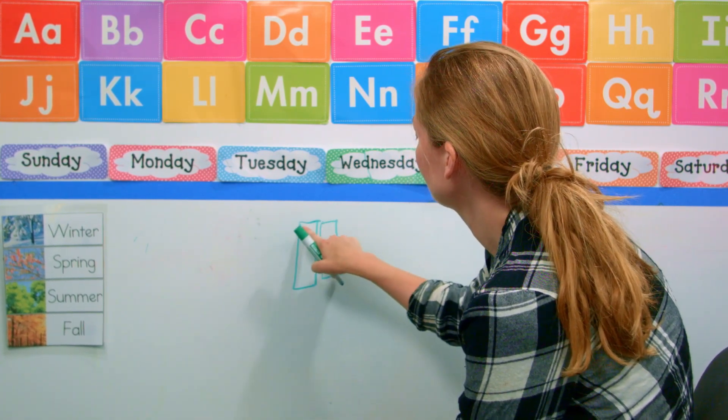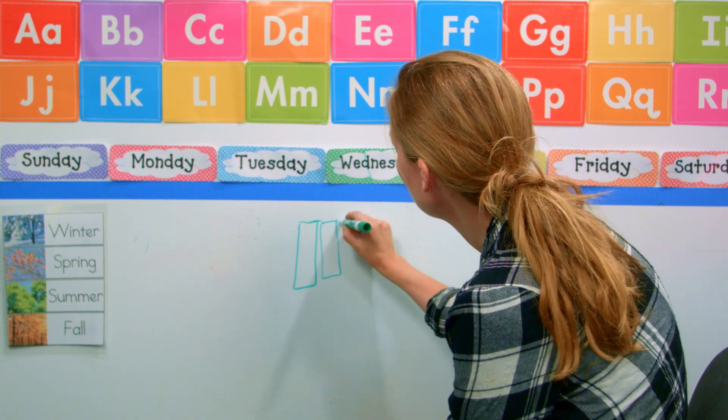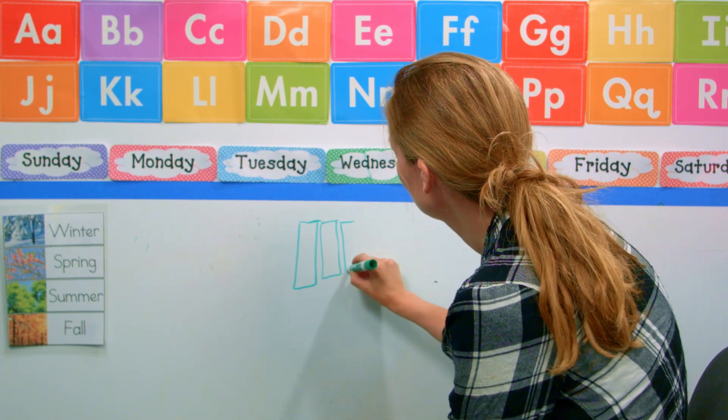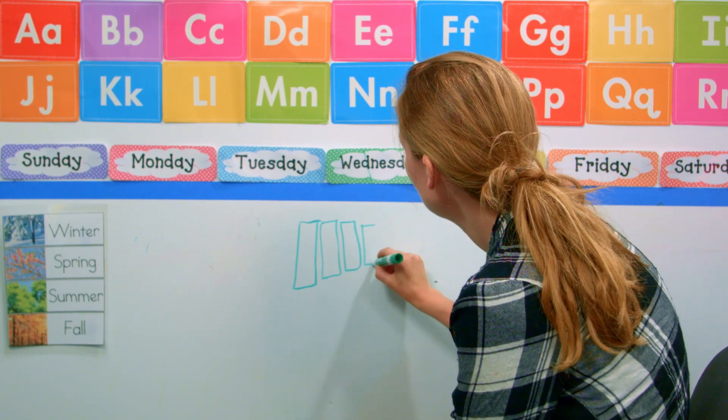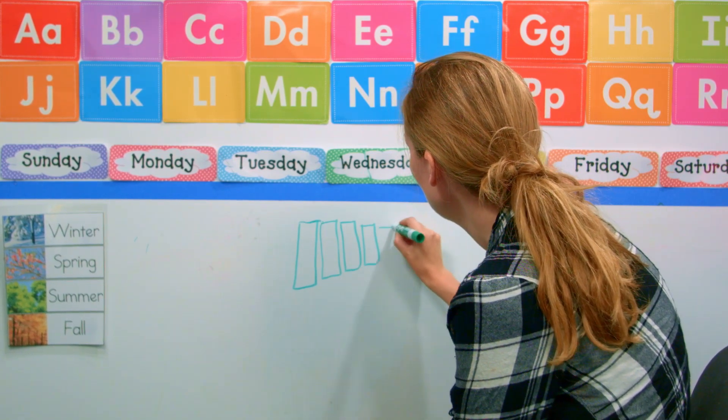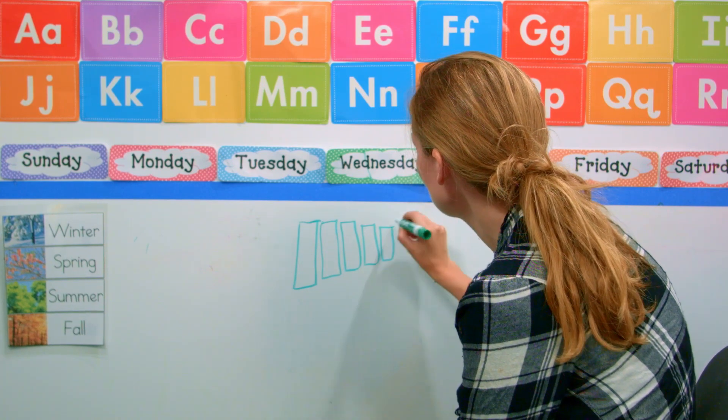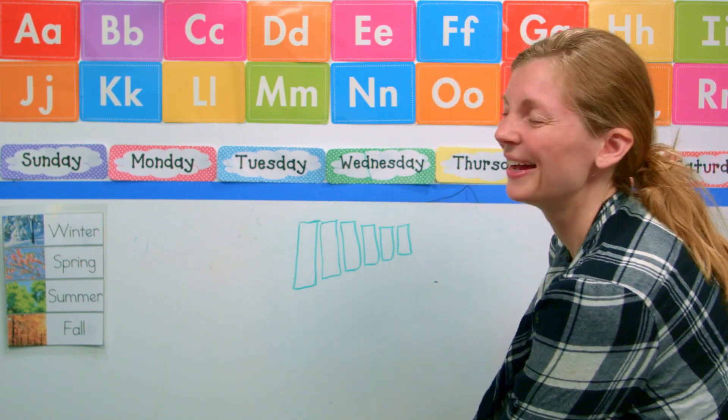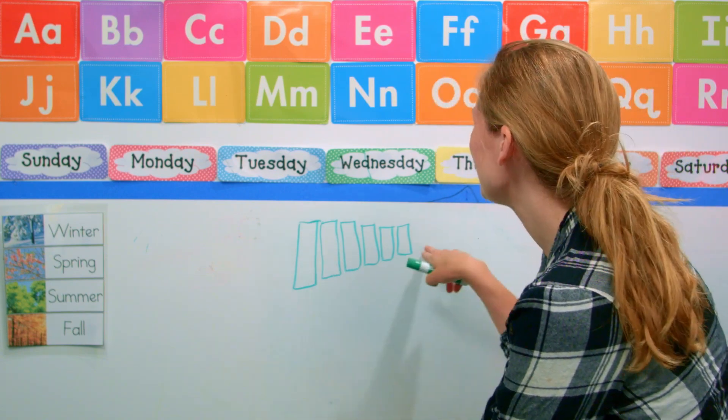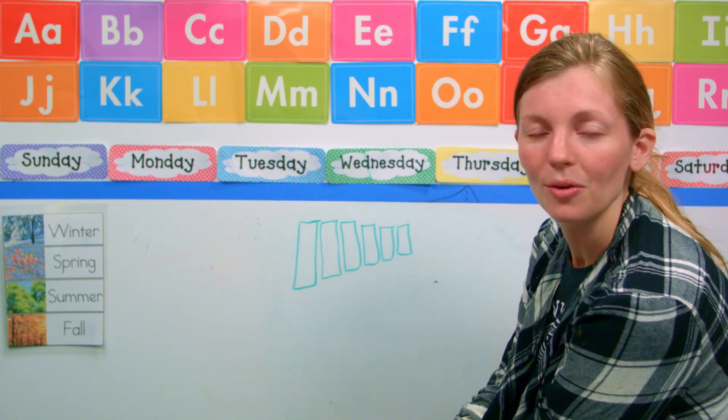So basically we are going to start with a really tall really big rectangle and then a medium rectangle and then one that's just a little bit smaller and just a little bit smaller and just a little bit smaller. You just keep getting smaller and smaller rectangles, I don't know why I said rainbows.